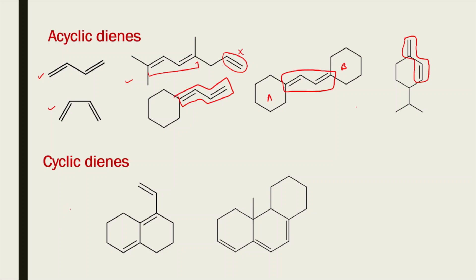In the case of cyclic dienes, both double bonds are part of the ring system. Even when a third double bond is in conjugation with the other two, if those two conjugated double bonds are part of the ring system, we consider it a cyclic diene.